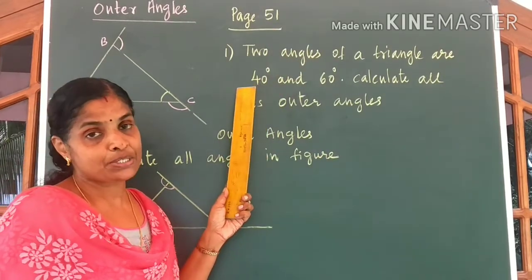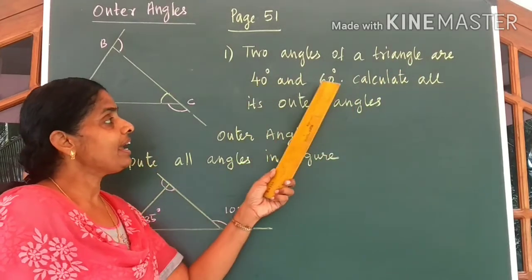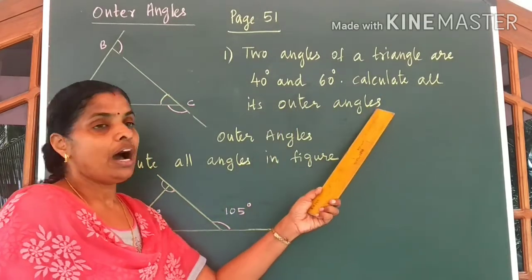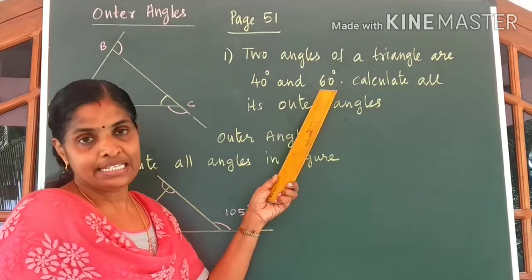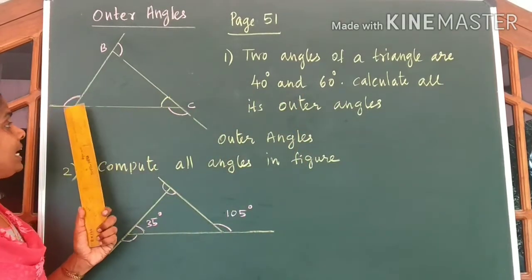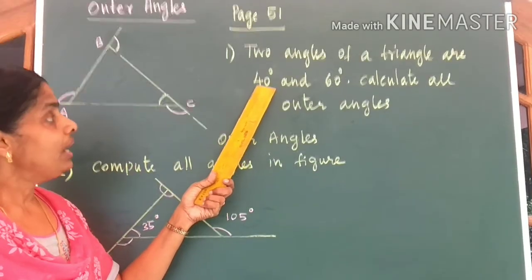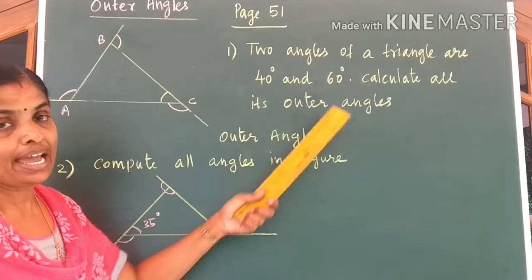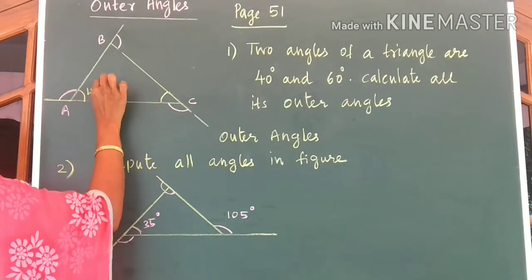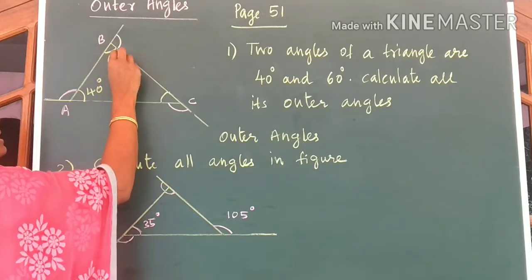Come to the first question. Two angles of a triangle are 40 degrees and 60 degrees. Calculate all its outer angles. To get an idea, I have drawn a figure here. ABC is a triangle. Let me mark the angles now — 40 and 60. So let this angle be equal to 40 degrees and let this angle be equal to 60 degrees.